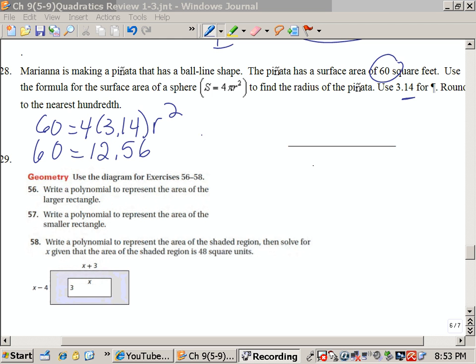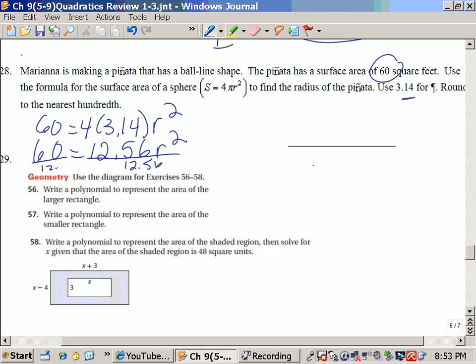Now I have r squared. Now I need to divide by 12.56 on both sides, and that gives me 4.77. So I'm going to put 4.8 equals r squared, taking the square root of each side. That gives me 2.18, which is 2.2.